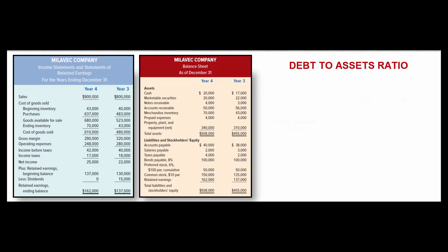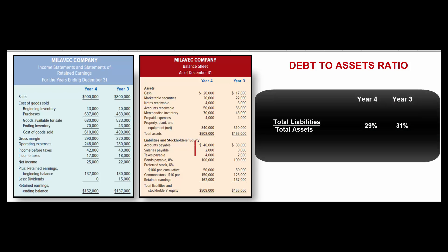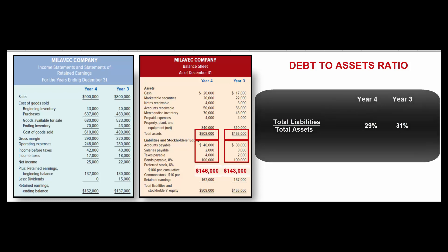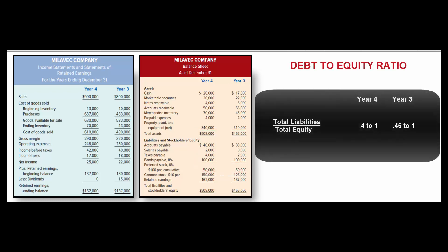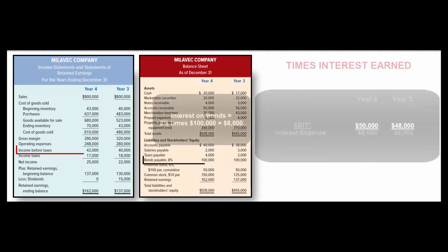Now let's look at solvency ratios to assess a company's long-term debt-paying ability. The debt-to-assets ratio is total liabilities over total assets: for year four that's 29%, for year three it's 31%. Another approach is the debt-to-equity ratio — total liabilities over total stockholders' equity: 0.40 to 1 for year four and 0.46 to 1 for year three.